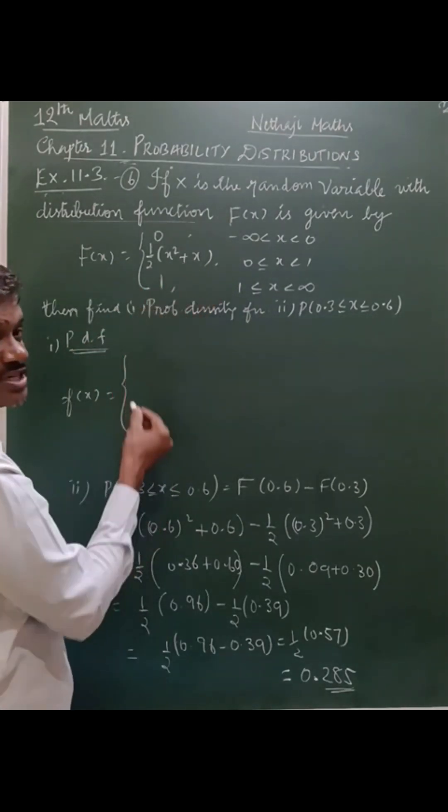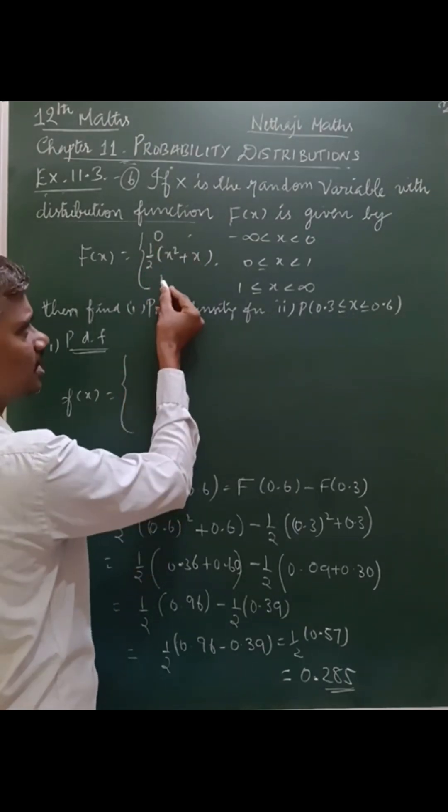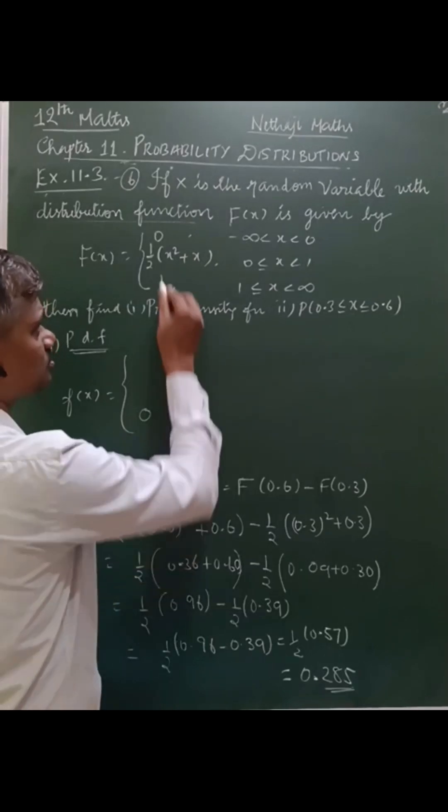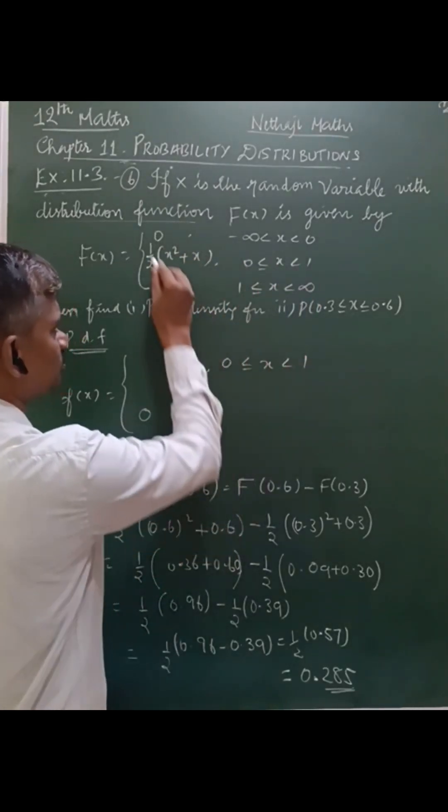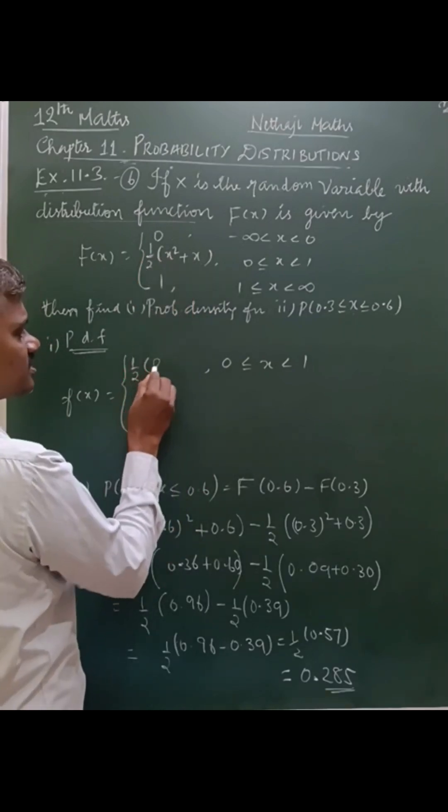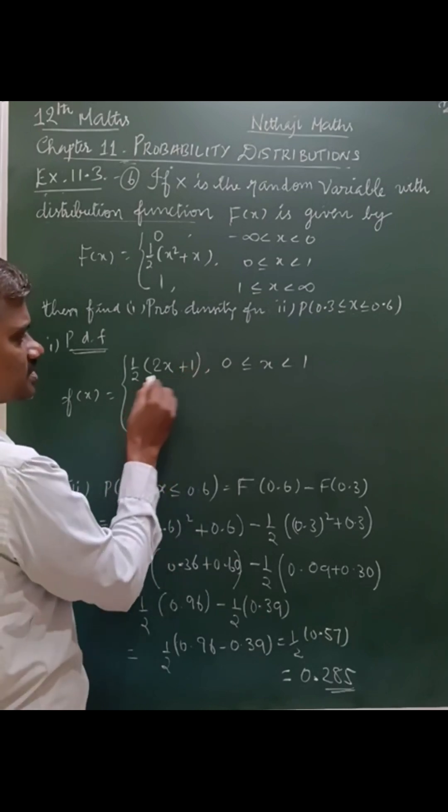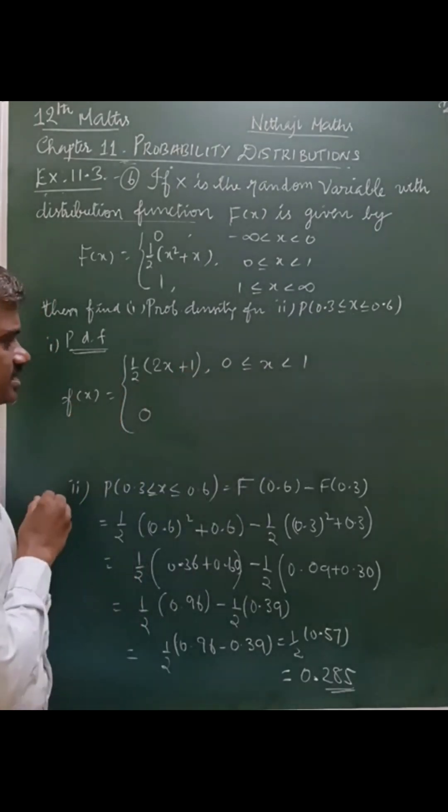So here we have to differentiate. If you have 3 functions, 0 differentiates to 0, and 1 differentiates to 0. For the middle interval 0 to 1, if we differentiate half x squared plus x, you will get half times 2x plus 1, which equals x plus 1. So this is the probability density function defined for 0 to 1.